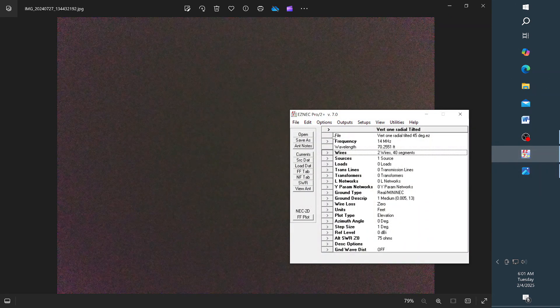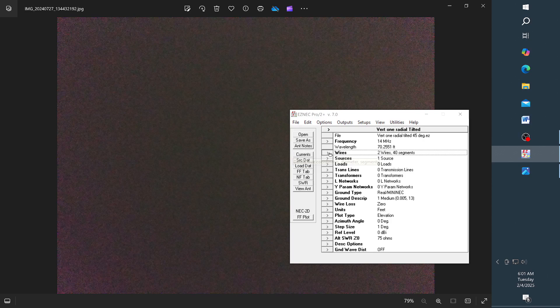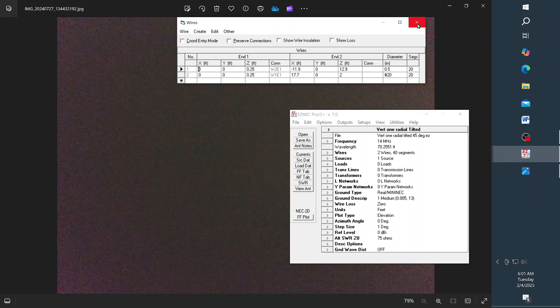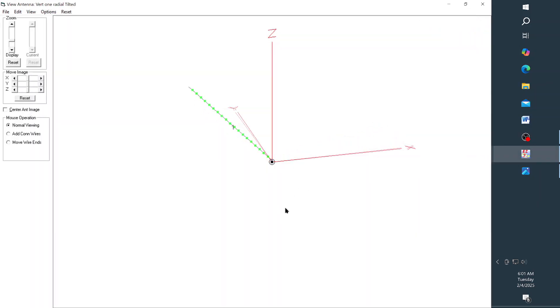We're going to launch EZNec. This is a file that I made up, vertical with one radial at 45 degrees. There's our wire list. And let's view that antenna. Here's the whip itself, and here's a radial. The radial is a quarter of a foot, or three inches off the ground here, and two feet off the ground here.